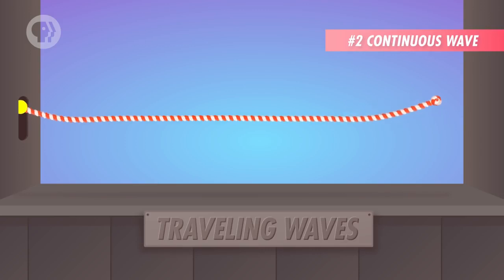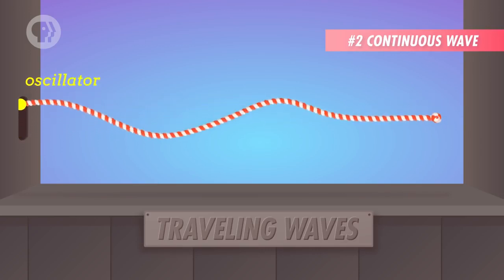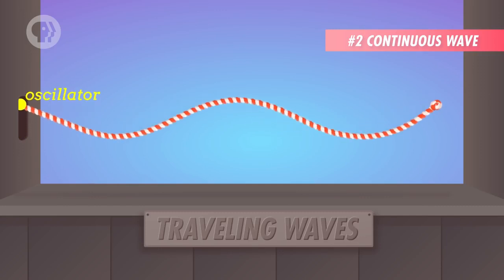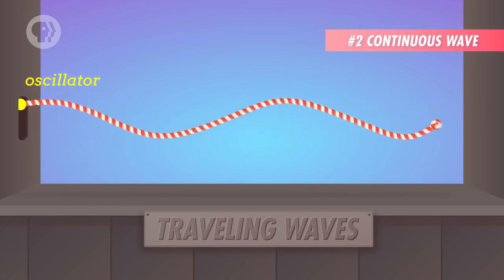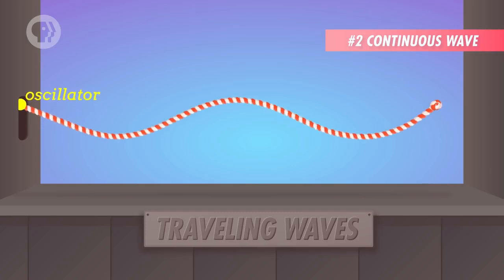Then there's the continuous wave, which is what happens when you keep moving the rope back and forth. In that case, your hand is acting as an oscillator. Anything that causes an oscillation or vibration can create a continuous wave.